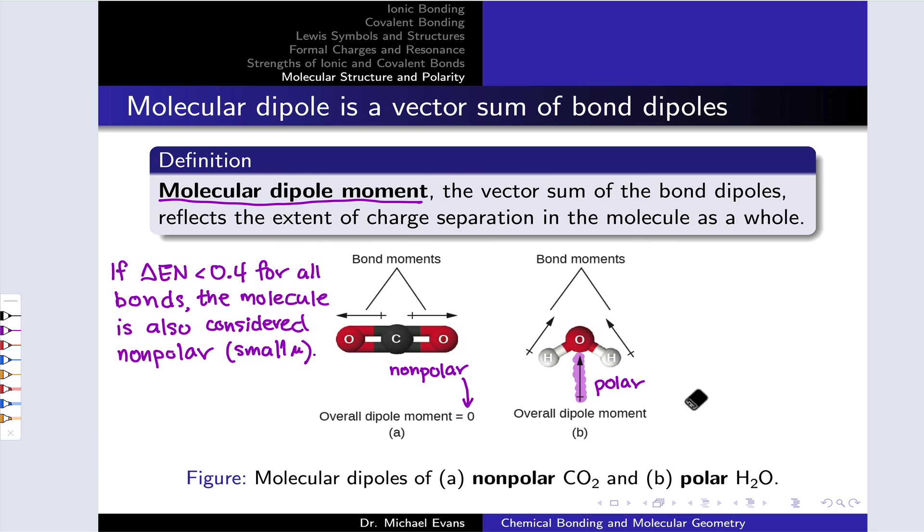So something like a hydrocarbon, propane, you know, C3H8, we're going to think about as a non-polar molecule overall, even though it may contain some slightly polar C-H bonds.